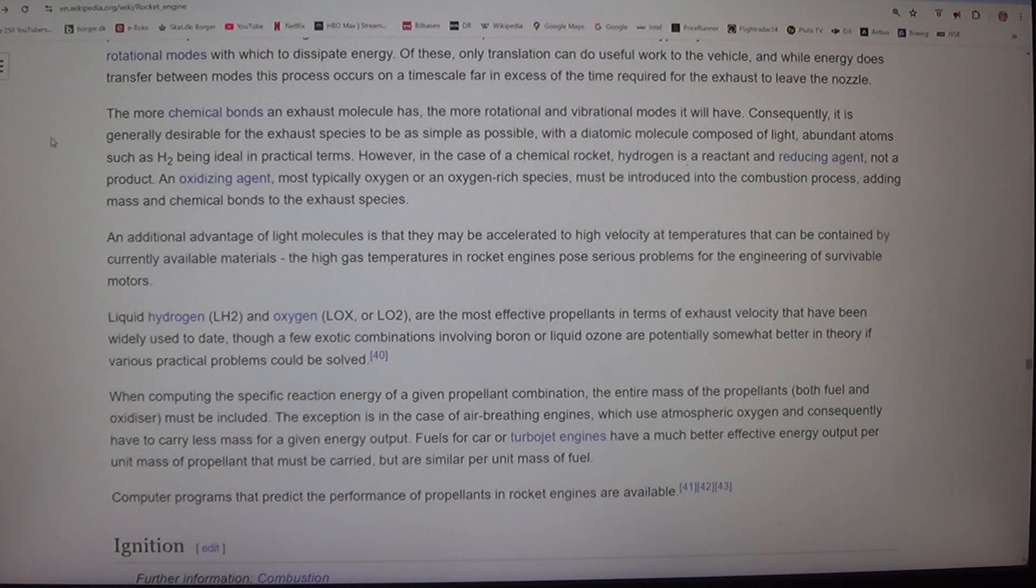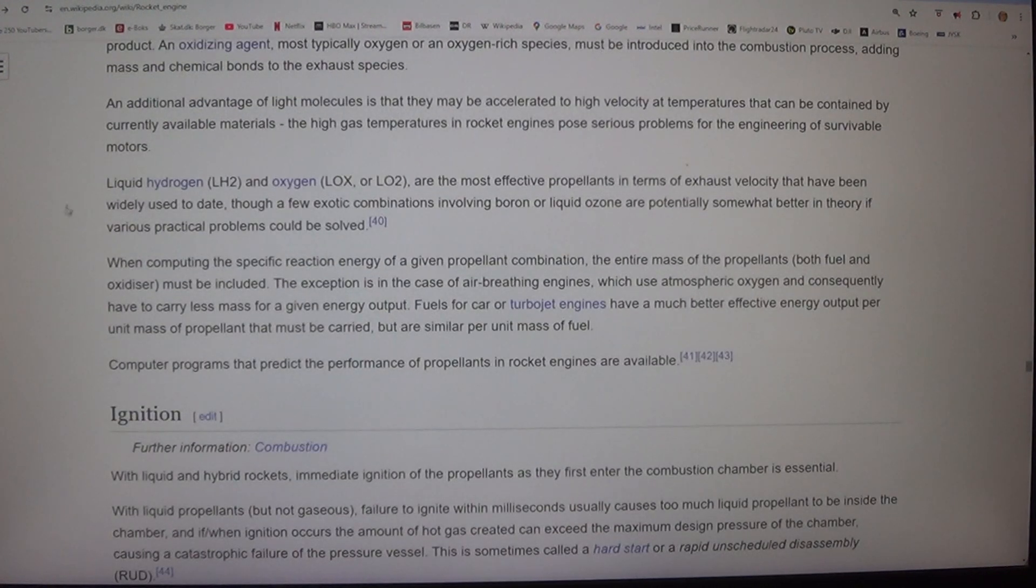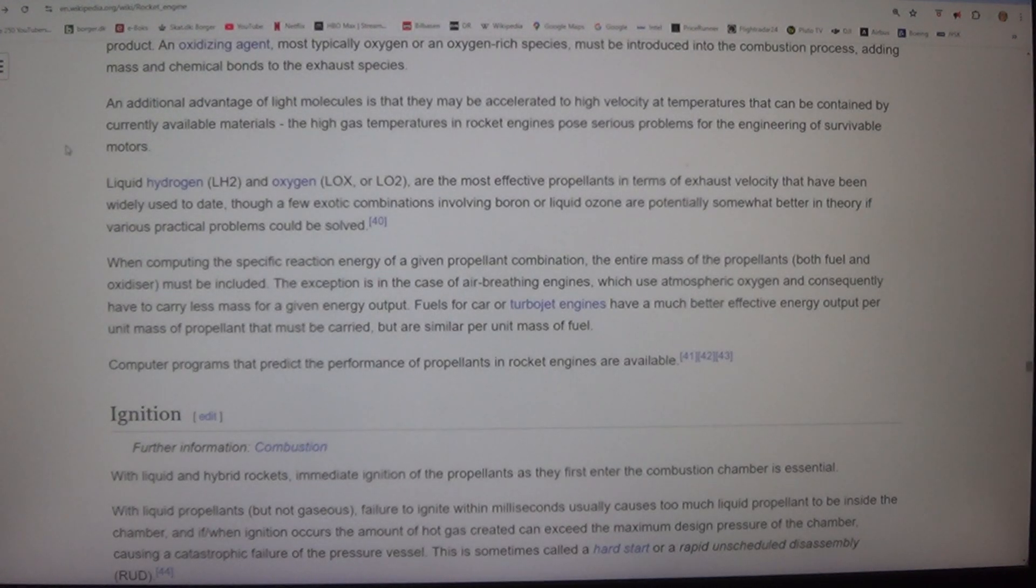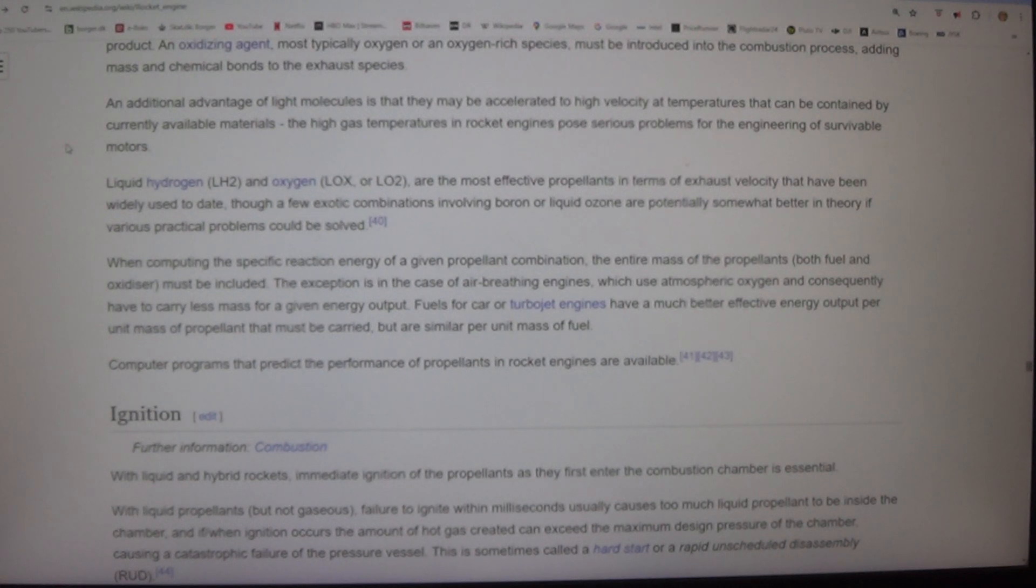However, in the case of a chemical rocket, hydrogen is a reactant and reducing agent, not a product. An oxidizing agent, most typically oxygen or an oxygen-rich species, must be introduced into the combustion process, adding mass and chemical bonds to the exhaust species. An additional advantage of light molecules is that they may be accelerated to high velocity at temperatures that can be contained by currently available materials. The high gas temperatures in rocket engines pose serious problems for the engineering of survivable motors.